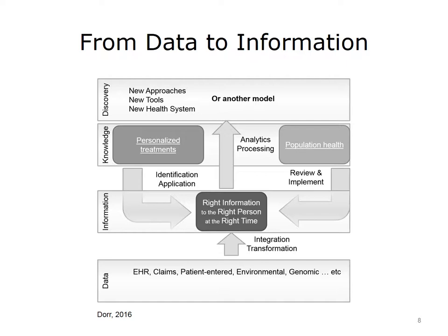Another way to think about this is how we use data and information to generate knowledge and discovery, and then provide that back to the right person at the right time. This model, developed by DOR, considers data to be the raw bits and bytes in databases. After the data is integrated and transformed, it can be considered information — that is, data with context and relationships. Information combined with knowledge can be used to drive decisions. For example, clinical decision support can control how information and knowledge are presented to people working to improve health and well-being.